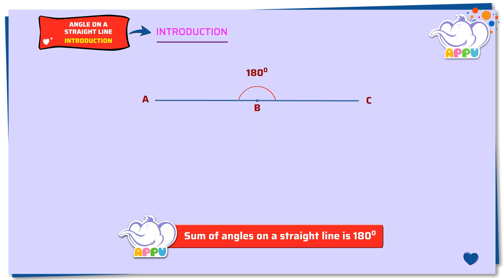Let's look at an example. Here ABC is a straight line. DB is another line forming an angle on the straight line ABC. Angle ABD and angle DBC are angles on the straight line ABC.